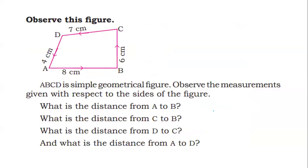Observe this figure. A, B, C, D is a geometrical figure. Observe the measurements given with respect to the size of the figure. Here, AB = 8 cm, BC = 6 cm, CD = 7 cm, AD = 4 cm.